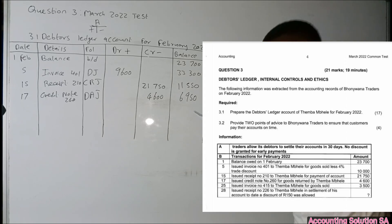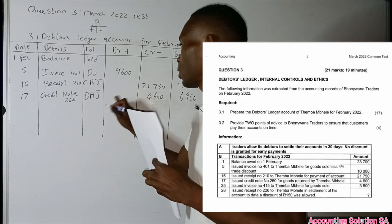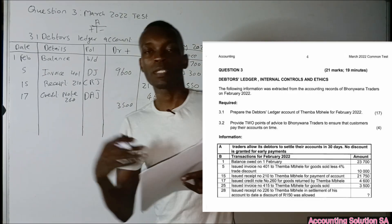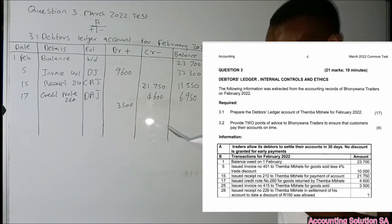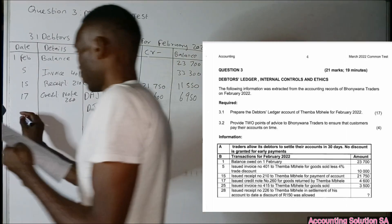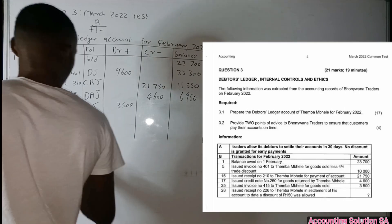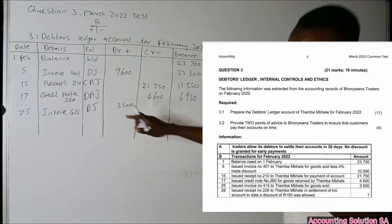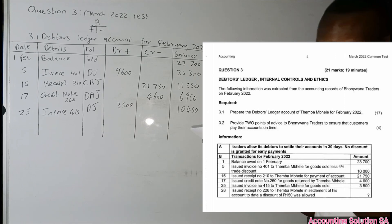Then on 25 February, Invoice 415 was issued to Timber Bale for goods sold — 3,500. This person purchased from us again, so the liability increases and we record it on the debit side under the debtor's journal, date 25 February, invoice number 415. Since it is on the debit side it is a plus, so the balance becomes 6,950 plus 3,500, which equals 10,450.